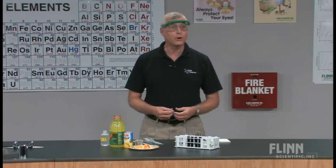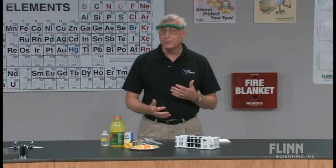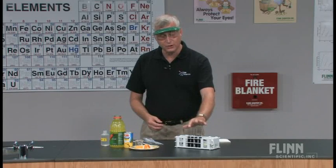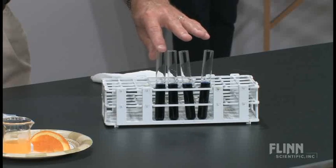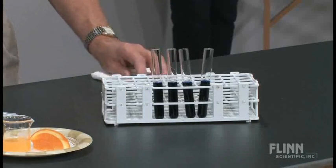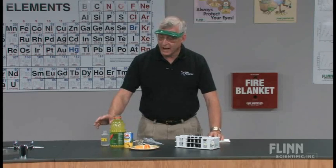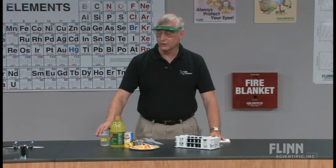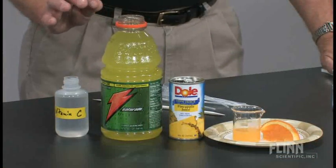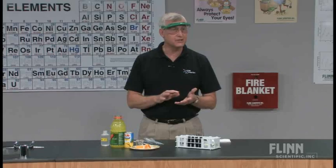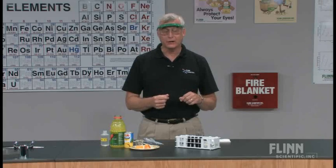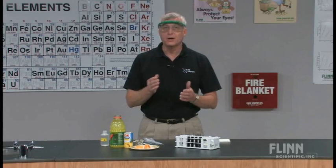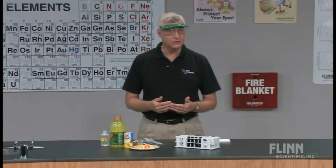This lab can be done two ways. It can be done in a qualitative process where we just compare the number of drops that it takes to neutralize a solution of dichloroindophenol — about a 0.025% solution. The documentation on how to prepare that will accompany the video. We're also going to be using a solution of Vitamin C that has been prepared as a 0.1% solution. If you want to do this quantitatively, you would do the mathematics, which is in the accompanying documentation.